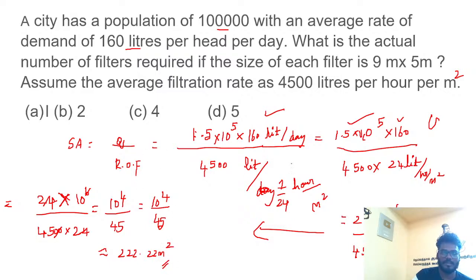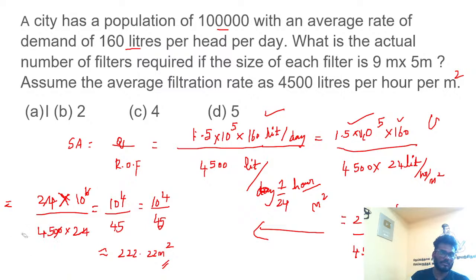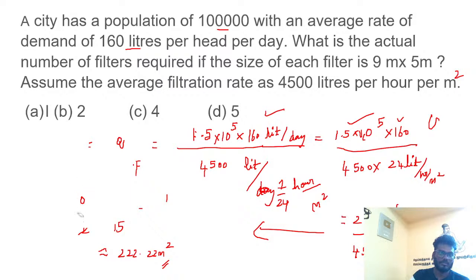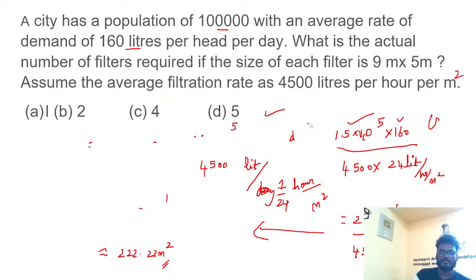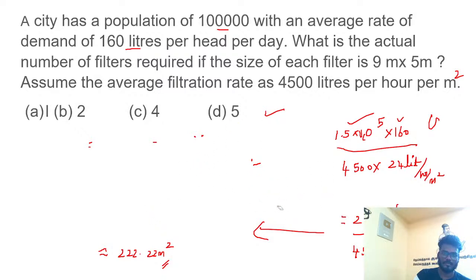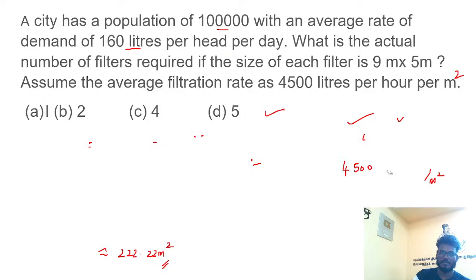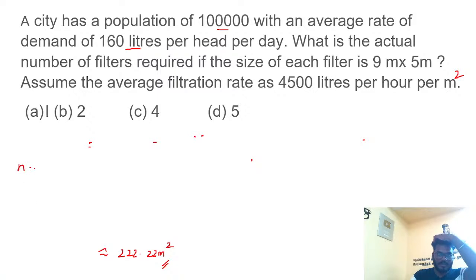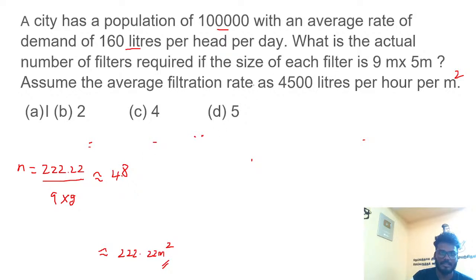Total area is approximately 222.22 m². Area of each filter is 9 × 5. Number of filters = total area / area of each filter = 222.22 / 45, which gives approximately 4.8, so approximately 5. That is option D — Delhi.